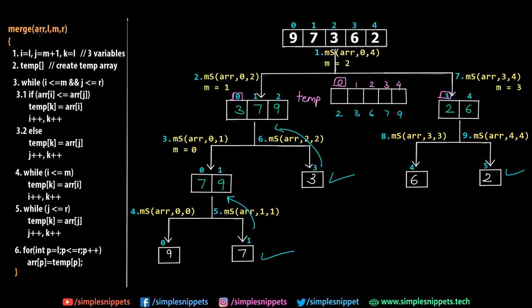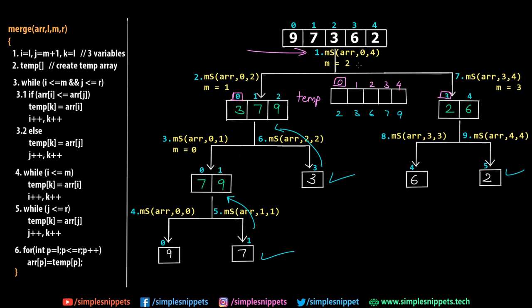We create a temporary array. Step 3 is a while loop with the condition: while i ≤ M AND j ≤ R. The first part (i ≤ M) keeps us within the left sub-array range (indexes 0–2). The second part (j ≤ R) keeps us within the right sub-array range (indexes 3–4). The AND means both conditions must be true. It's possible one array gets exhausted first — that's why we use AND.